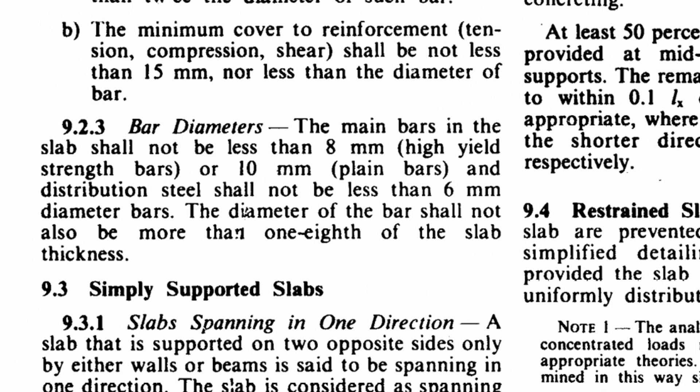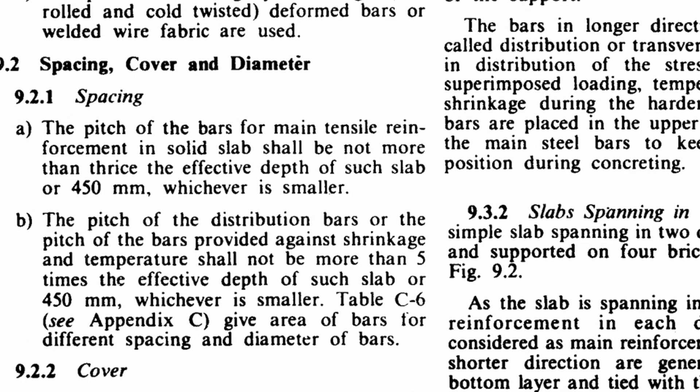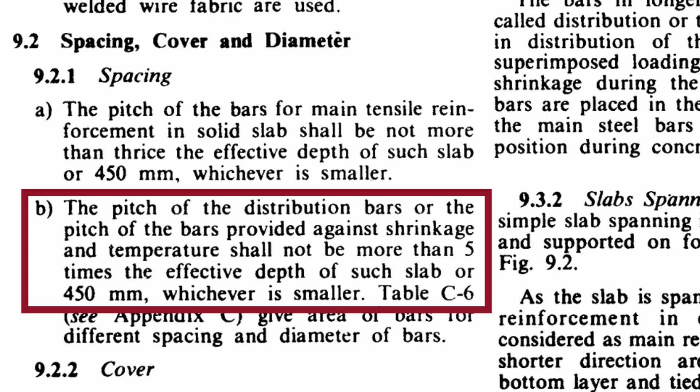According to SP34, distribution bars shall not be less than 6 mm in diameter and the diameter of these bars shall not be more than 1 eighth of the slab thickness. The spacing of distribution bars shall not be more than 5 times the effective depth of slab or 450 mm, whichever is smaller.